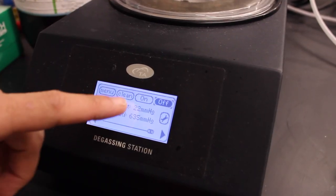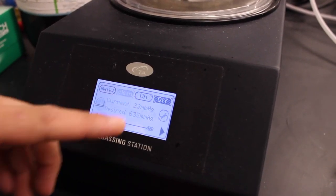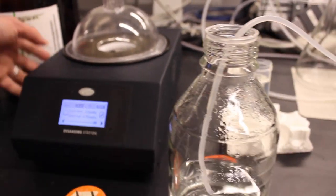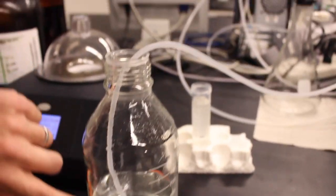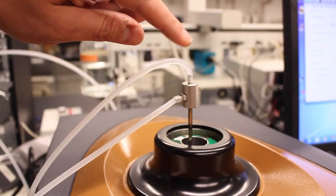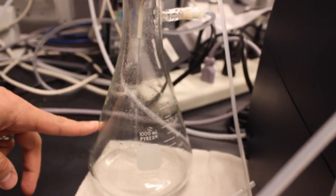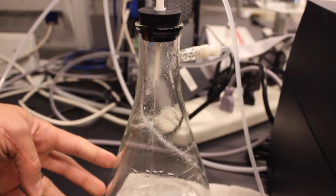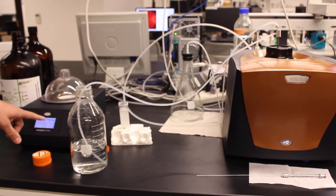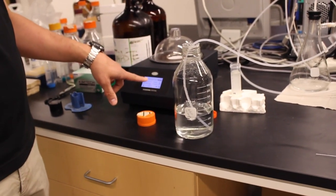Use the degassing station. Press the button that says clean. It will turn on the vacuum pump. It will start to suck up the solution through the cleaning wand and then the liquid will come out in this container here. You can turn off the vacuum by pressing the clean button again.